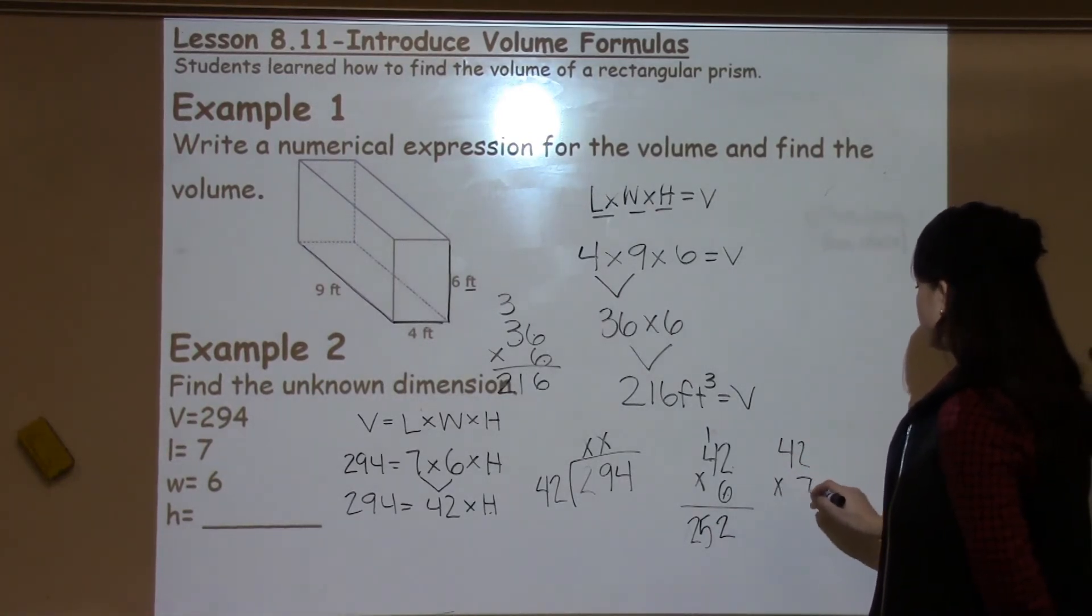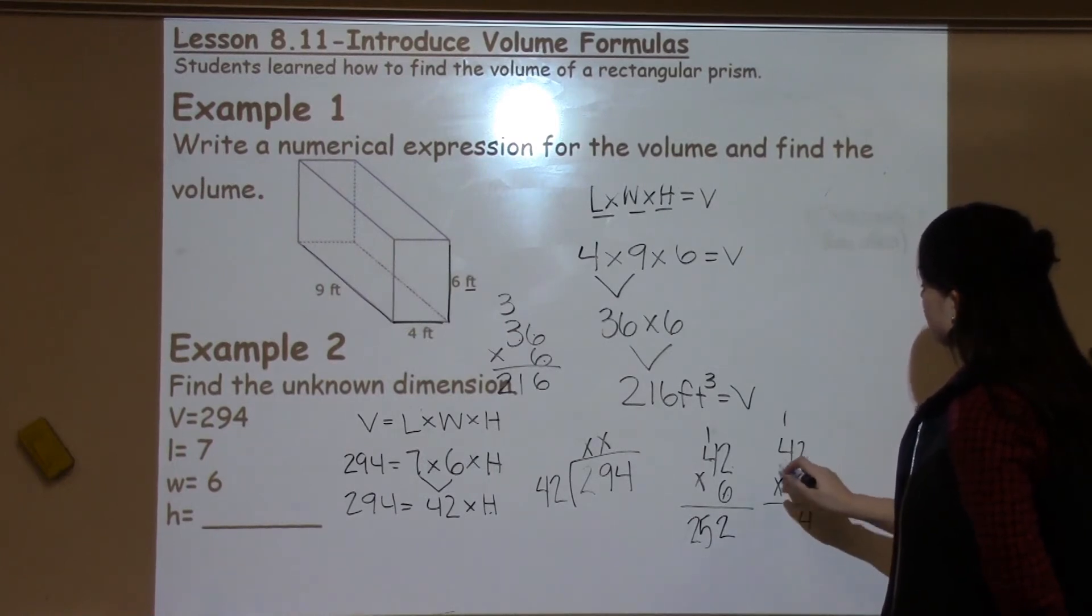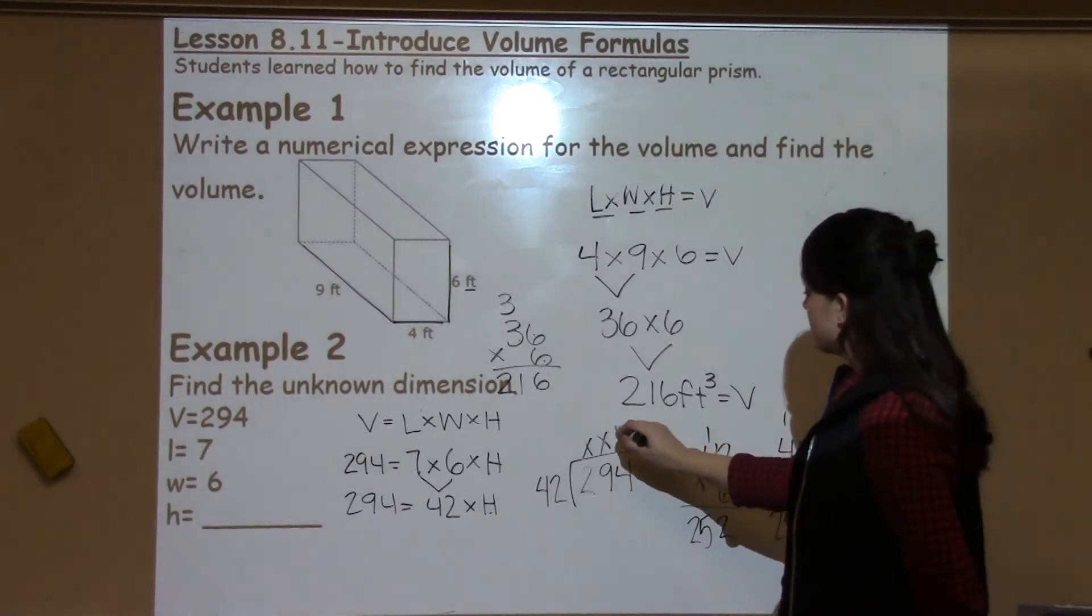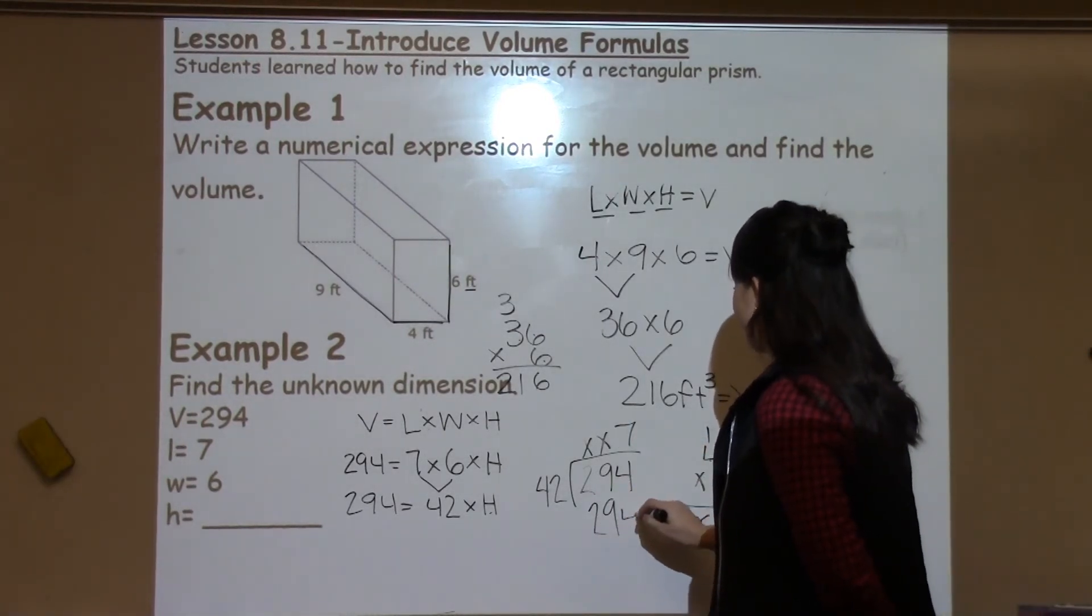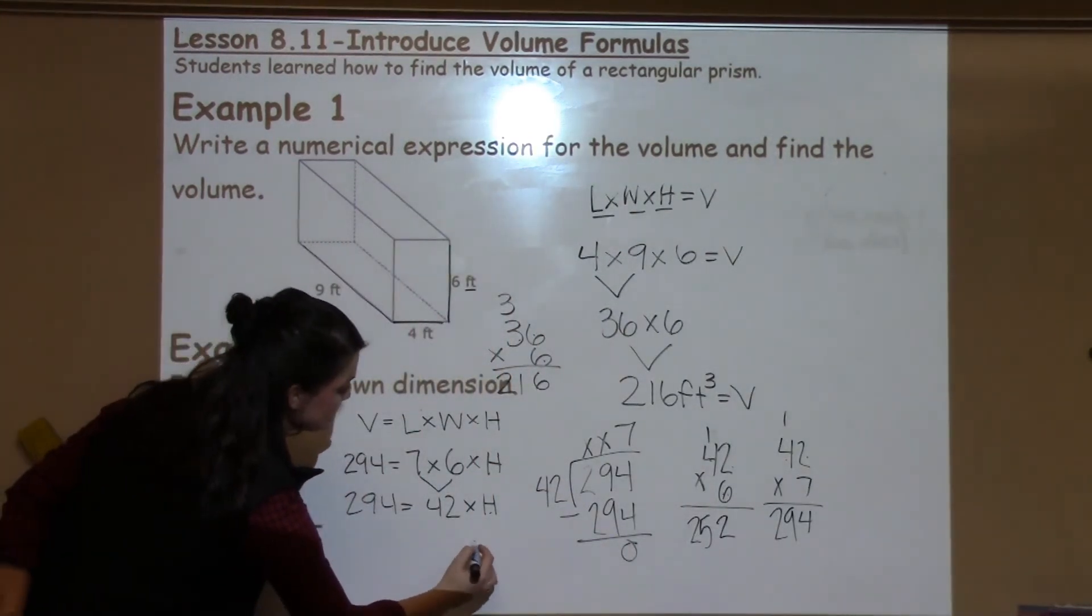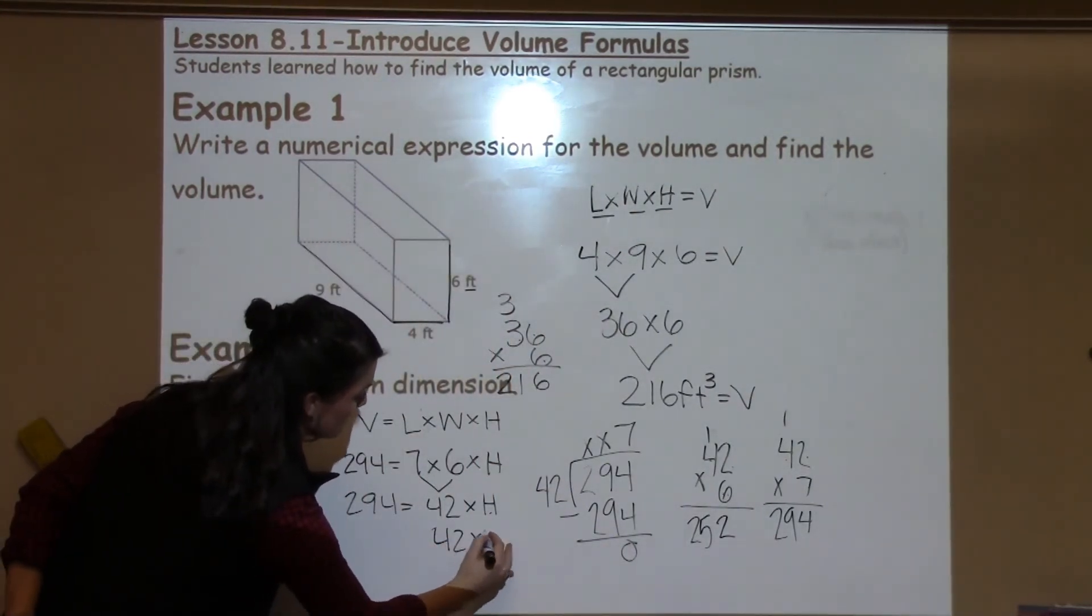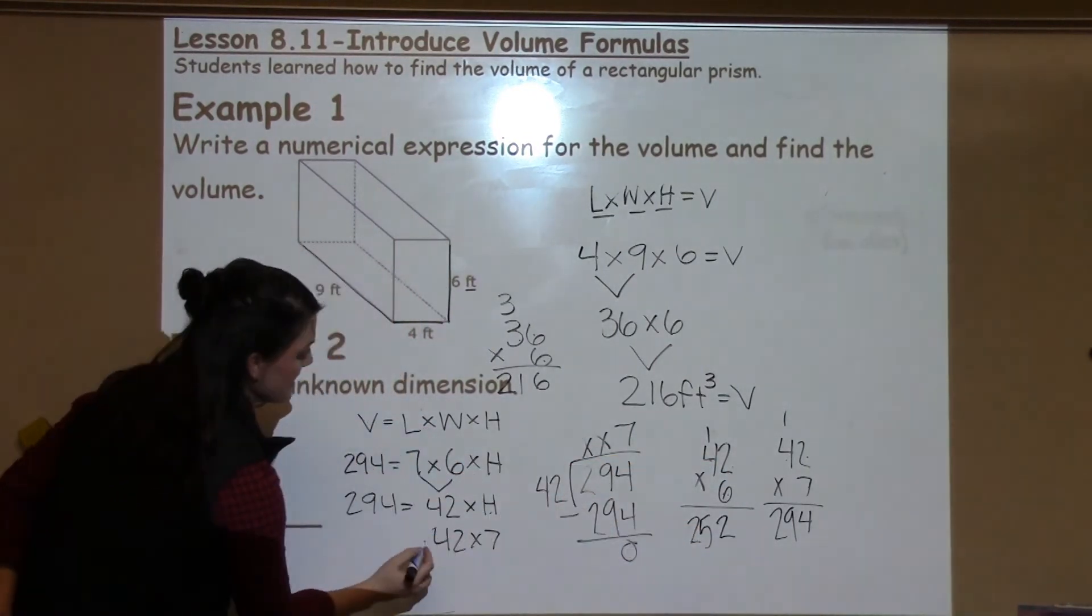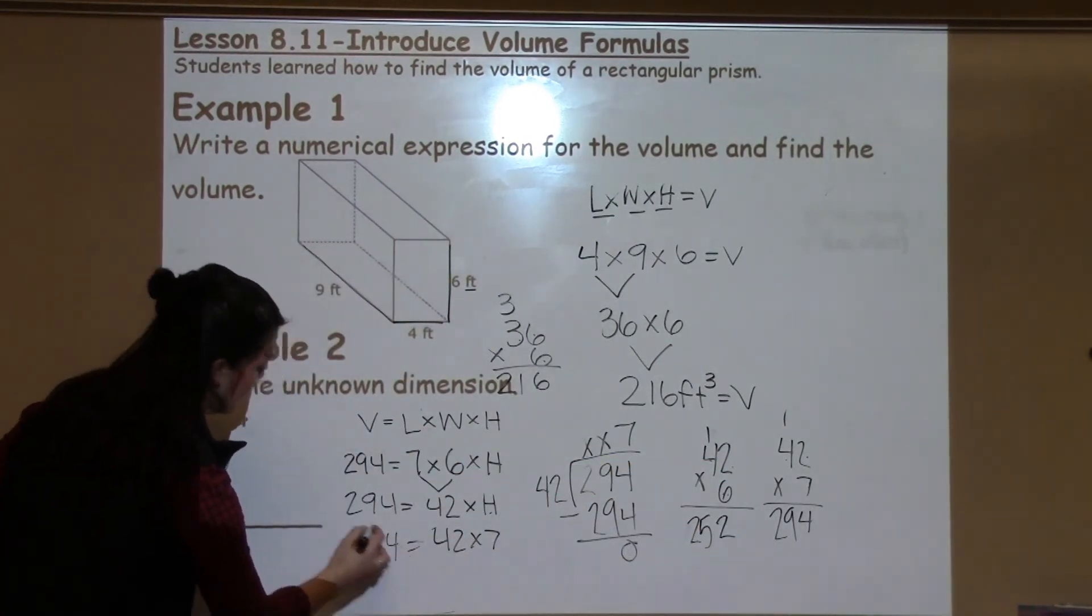So I'm going to try 42 times 7. 2 times 7 is 14. Carry the 1. 7 times 4 is 28 plus 1 is 29. Yes! Gives me exactly what I need. So I know that my height is going to be 7 because I know that 42 times 7 is exactly 294.